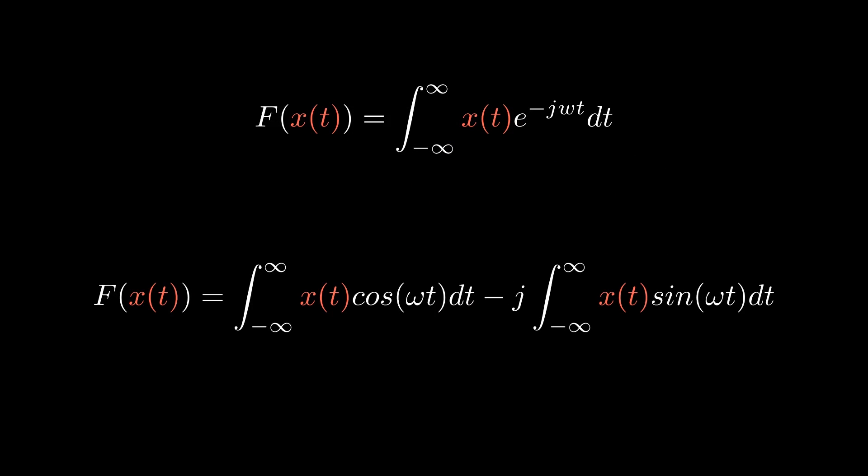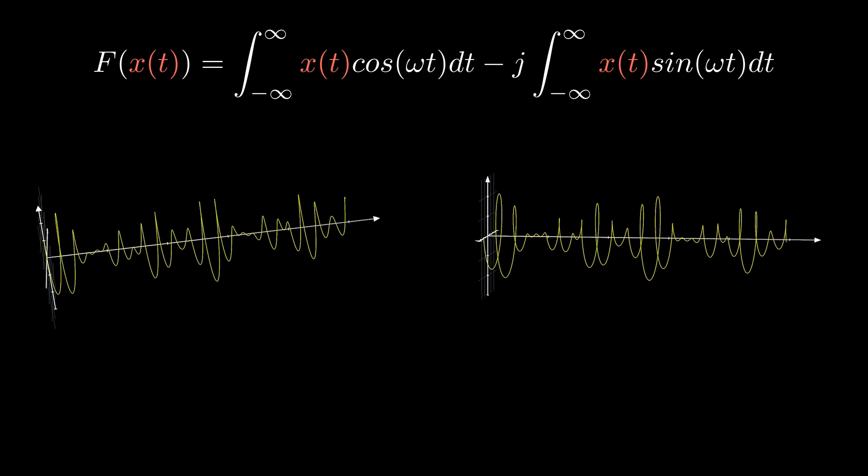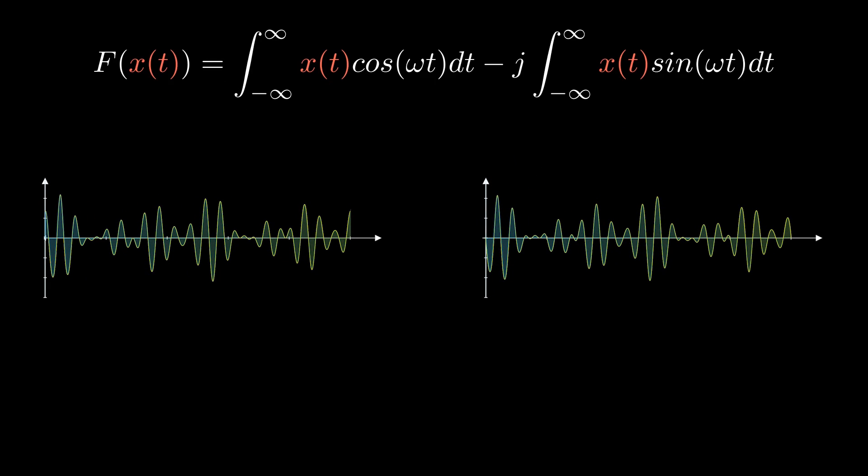Fourier transform of a function is nothing more than the integral of a complex exponential whose amplitude varies depending on that function. By expanding e to the minus j omega t using Euler's formula, it can be geometrically understood as finding the area under the real and imaginary parts of the variable amplitude complex exponential.